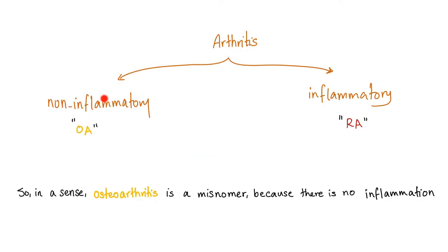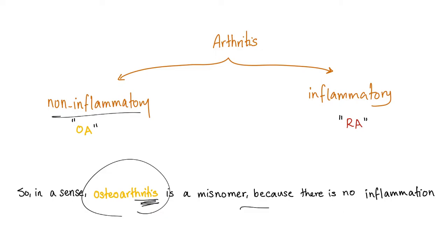Arthritis — joint inflammation — is divided into non-inflammatory and inflammatory arthritis. In a sense, osteoarthritis is a misnomer because '-itis' means inflammation, but it's non-inflammatory. There is no inflammation in osteoarthritis. ESR is not high, CRP is not high — it's a wrong name. My preference would be to call it osteoarthropathy, but nobody listens. They just call it osteoarthritis — because Harrison, for some reason, knows better.